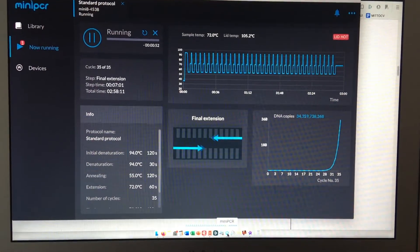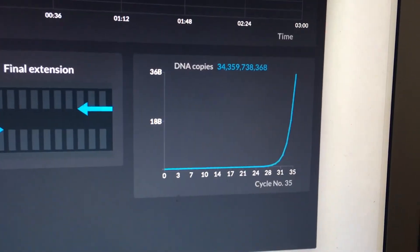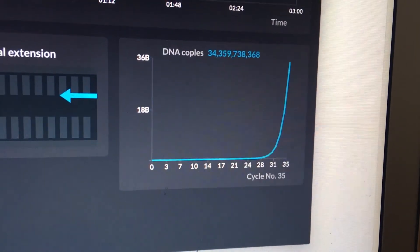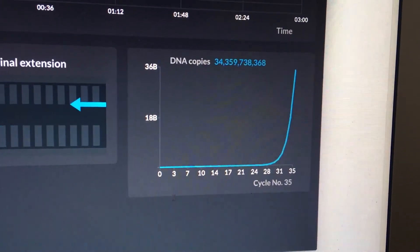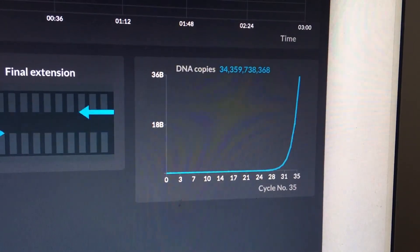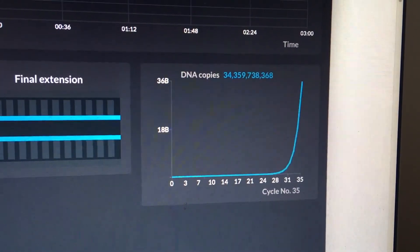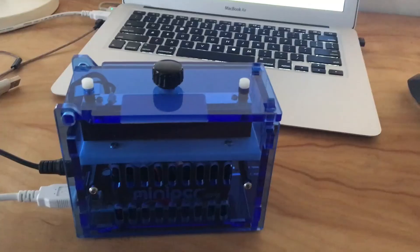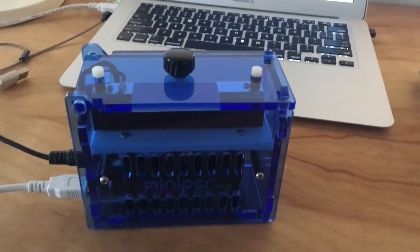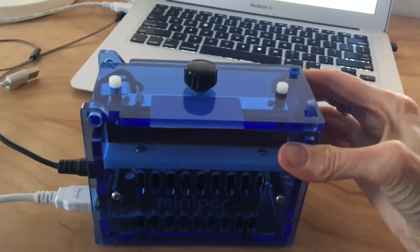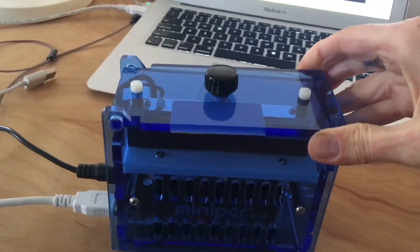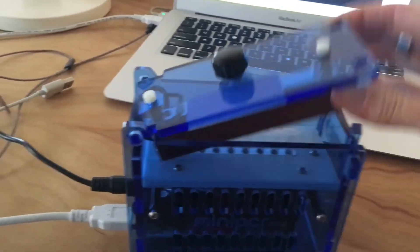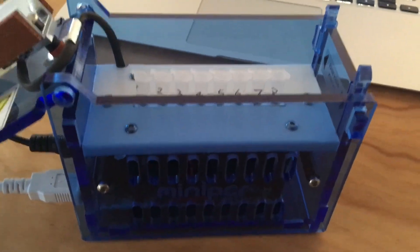So we're nearing the end of the PCR process, and as you can see there in the corner, we've created 34 billion copies of the DNA that we initially went in there with. So that's quite a lot. That's enough for the lab to get us a sequence. And we're done with the polymerase chain reaction, so we can pop the lid, and these are now ready for gel electrophoresis.